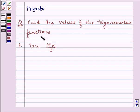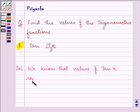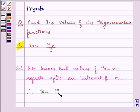find the values of the trigonometric functions, that is tan(19π/3). We know that values of tan x repeat after an interval of π. Right.